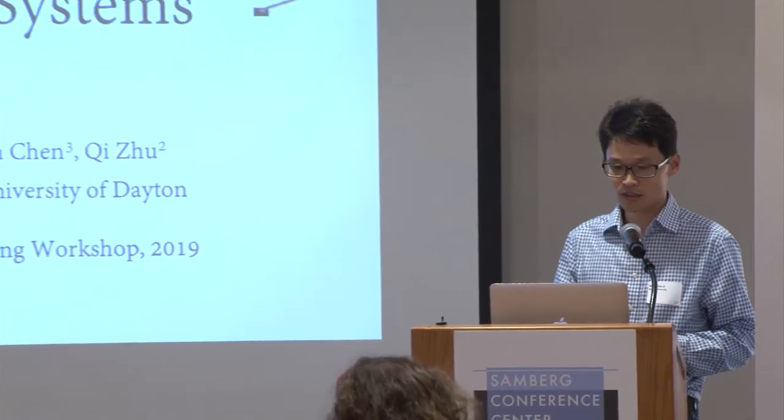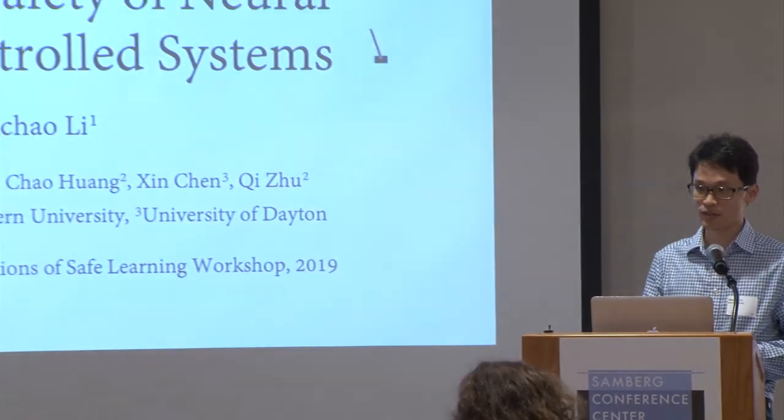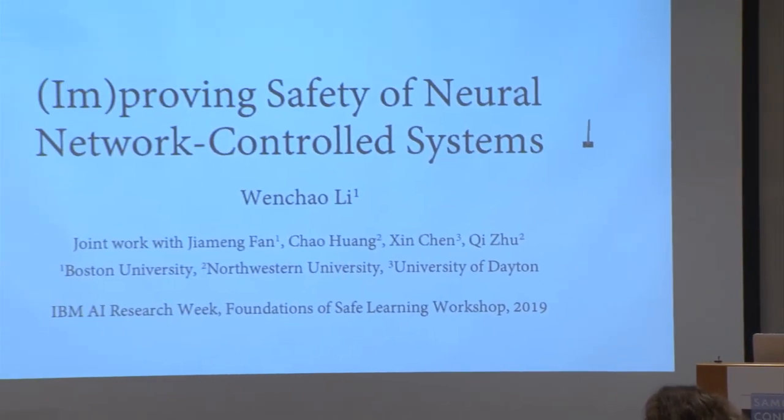So instead of making a blanket statement on the role of formal methods in AI safety, I'm going to focus on a specific problem: improving or even proving safety of neural network control systems. This is joint work with my student Jiang Meng Fan and collaborators at Northwestern University and the University of Dayton.